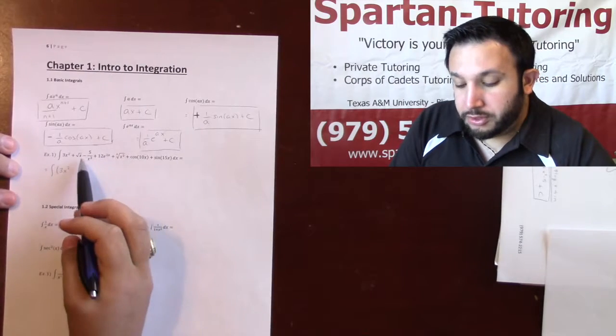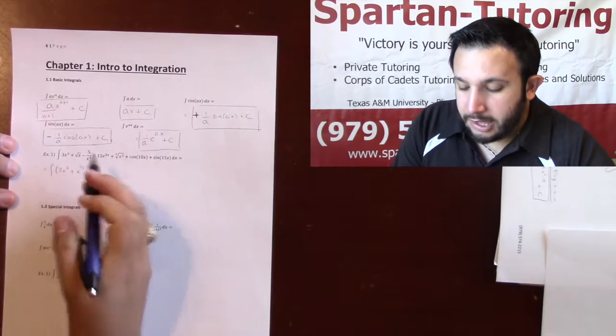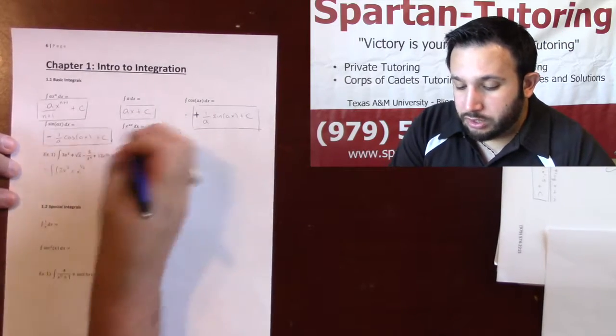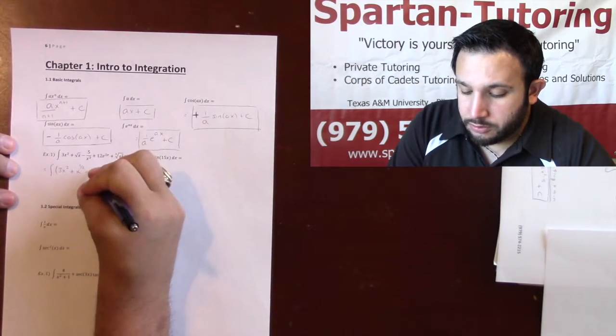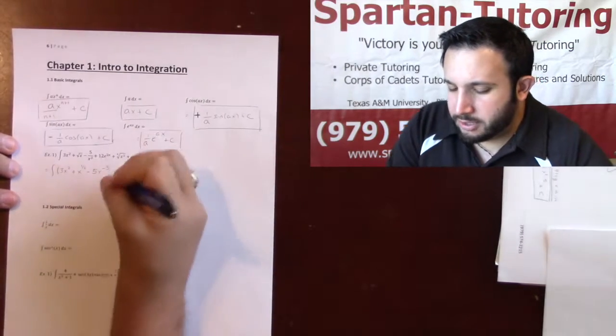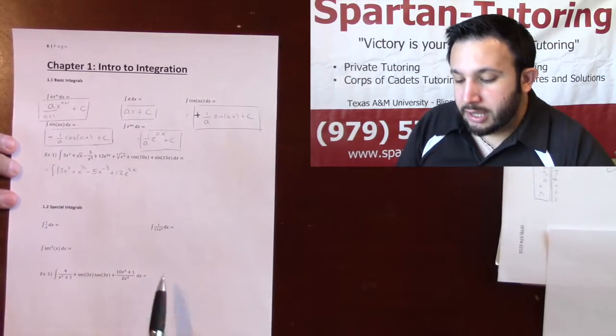But we know that the square root of x is x to the 1 half. The minus 5 over x cubed, in order to actually use our rules of integration, we need to bring that x cubed to the top. But when I do, we make that a negative exponent. The e is okay, e to the 2x.